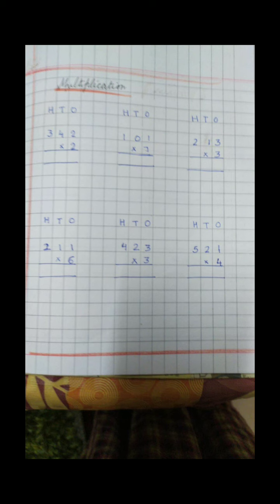Now if we talk about alphabets: A has slanting lines and a sleeping line. S has only curved lines. R has a standing line, a curved line, and a slanting line. So we have seen these — practice it.